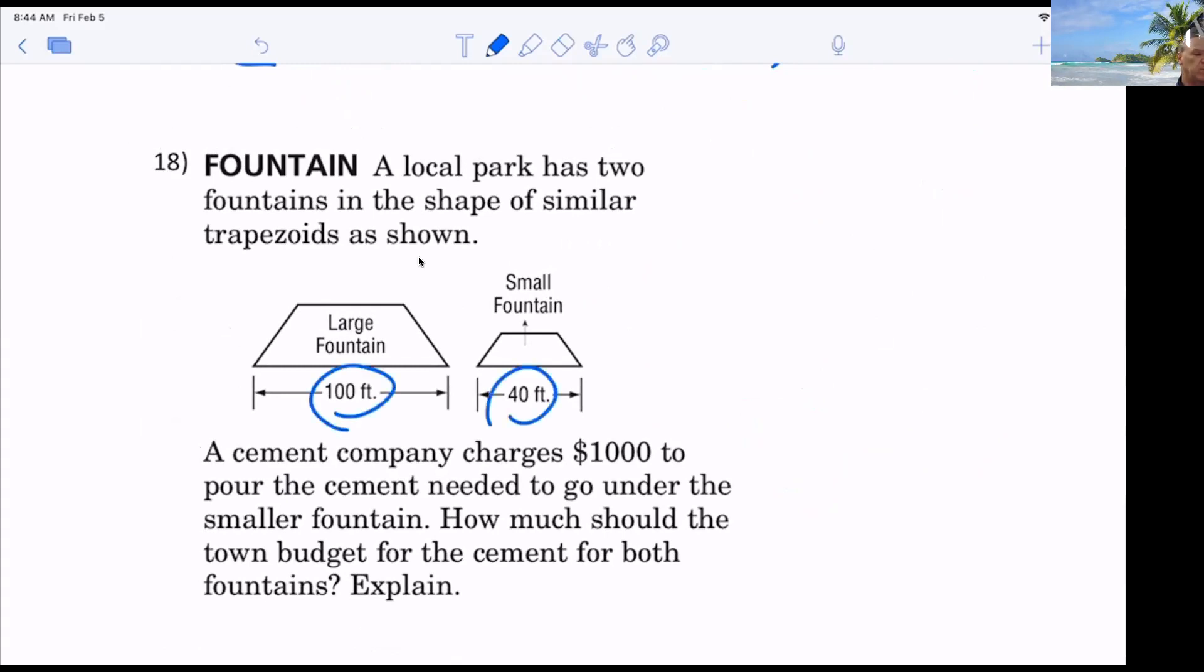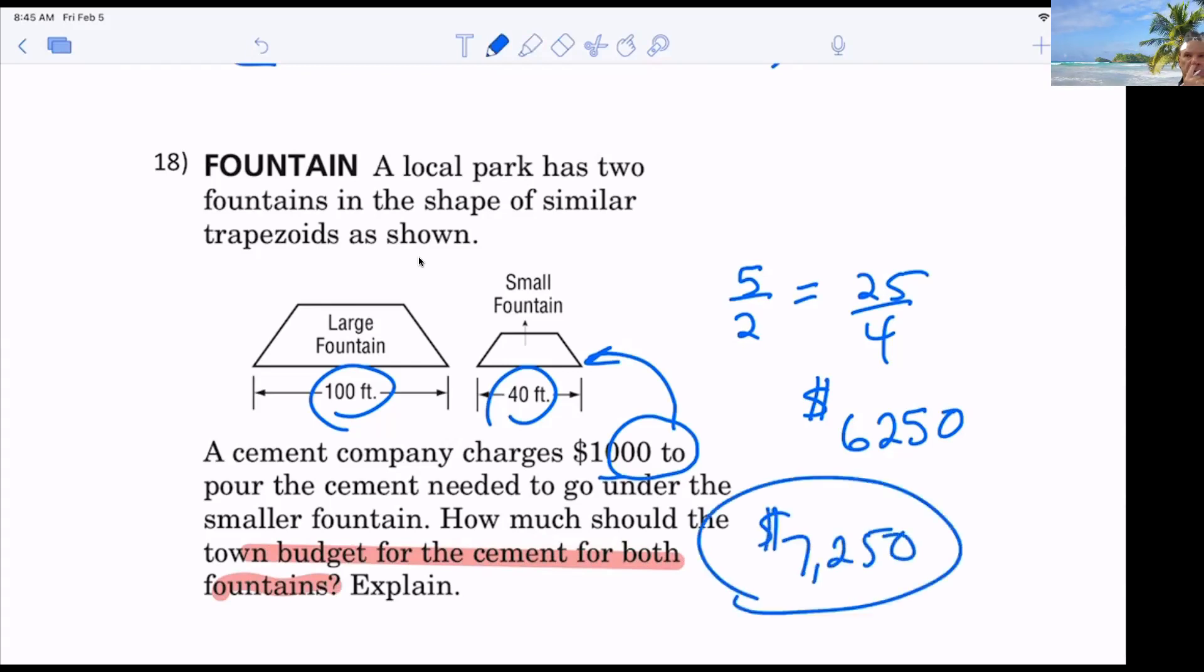So now we have similar trapezoids. So it's in a ratio of what? Five to two. Is that what you're telling me? So now the ratio of the areas would be what? 25 to four. Let's see if we don't make the same mistake we made last time. Correct? Right. So if it's 25 to four, then if you charge 1,000 for the smaller one, then you would charge what? 6,250 for the larger one, correct? And this is where we made the mistake last time. Yeah. We want for both fountains. So that would cost me what? $7,250 for both.